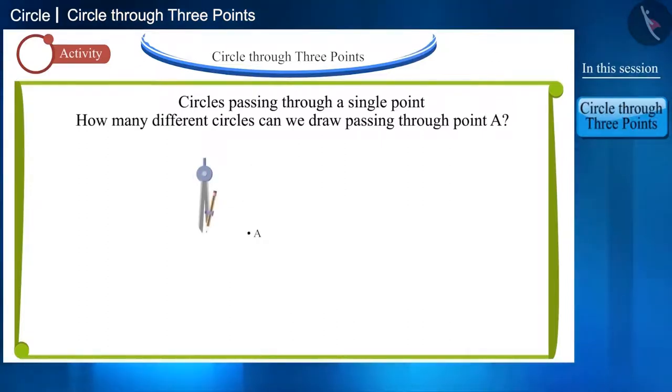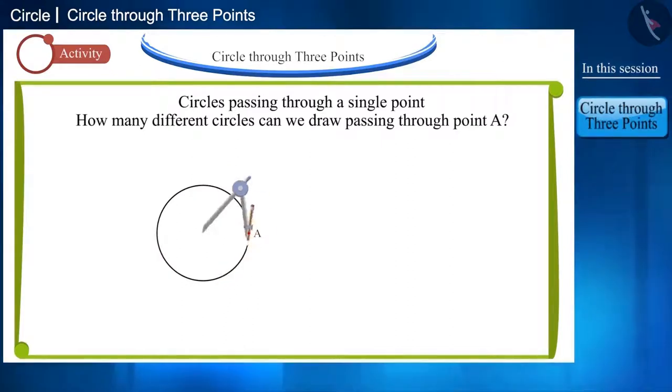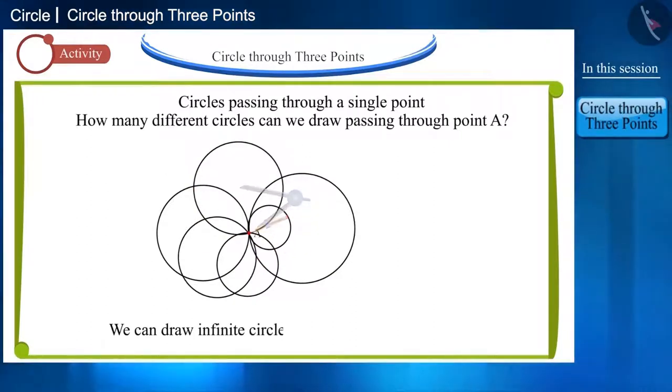So friends, how many different circles can we draw passing through point A? If we draw circles using a compass, we'll find that infinite circles passing through point A can be drawn.